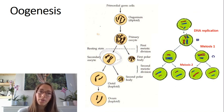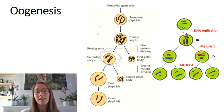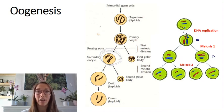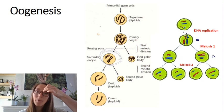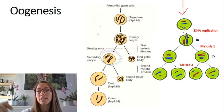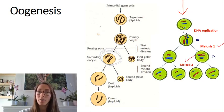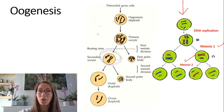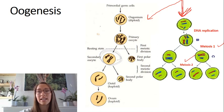Oogenesis has to be linked to meiosis. It's a little more complicated than spermatogenesis because there are certain points where the process gets paused and then restarted throughout a female's life — literally from when she is a fetus, all the way up until menopause. On the right we have the process of meiosis — meiosis 1 and meiosis 2. Oogenesis is not exactly the same as that diagram, because we don't get four equal gametes.